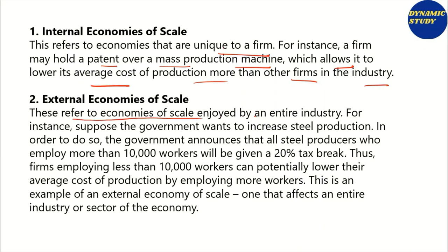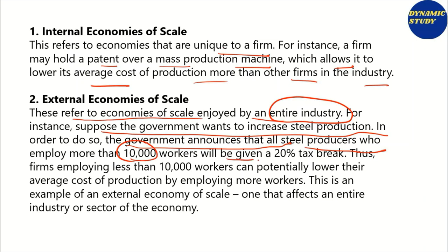External economies of scale are enjoyed by the entire industry. For example, suppose the government wants to increase steel production. The government announces that all steel producers who employ more than 10,000 workers will be given a tax break. Thus, firms employing less than 10,000 workers can potentially lower their average cost of production by employing more workers. This is an example of external economies of scale.